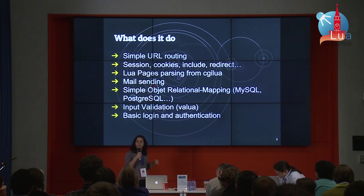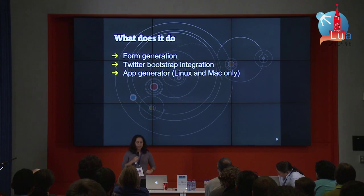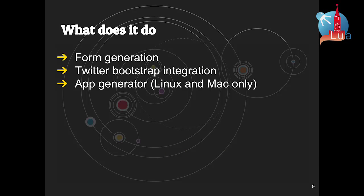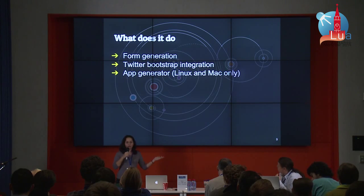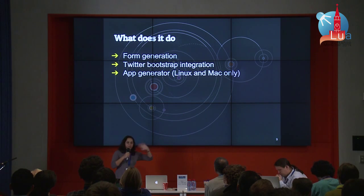It already comes with a basic login and authentication system, so you don't have to develop a login system every time you build something. It has a basic form generation inspired by your model — so if you want to save a user, you can generate the inputs easily. It's integrated with Twitter Bootstrap so your app doesn't look ugly right out of the box. It has a simple app generator for Linux and Mac — a command line tool where you say 'create application name on directory' and it will copy a blank application to your desired directory.